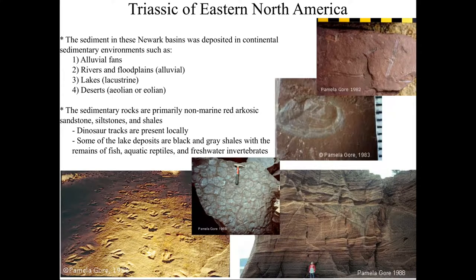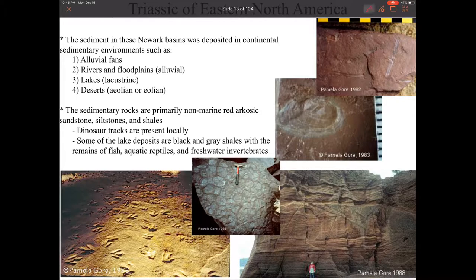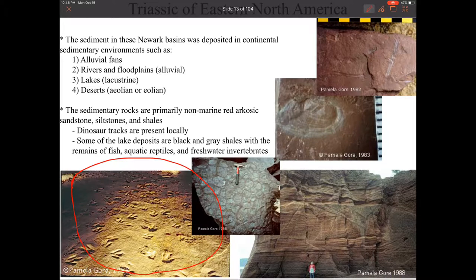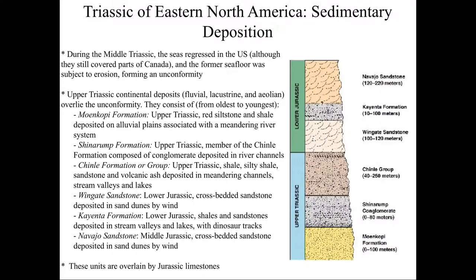In the Newark Basin, we're going to see alluvial fans — basically the delta that forms at the base of the mountains and catches all of that material. We're going to see lots of rivers and floodplains as they flow across the low part of the basin. We're also going to have lots of lakes and deserts, which really sets a prime spot for lots of dinosaur trackways. Dinosaurs are going to go towards the rivers, and we have lots and lots of trackways from this time.